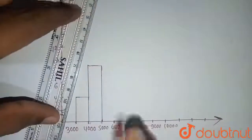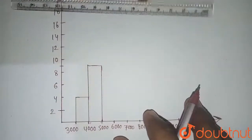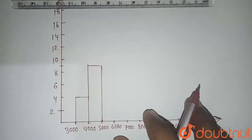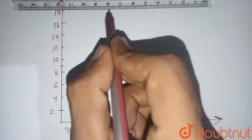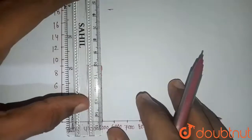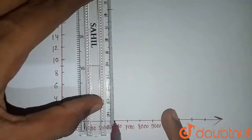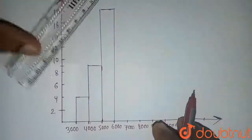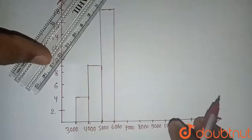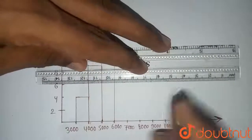From five thousand to six thousand, the number of people is 18, which is the highest frequency. We draw the tallest rectangle for this interval. From six thousand to seven thousand, the frequency is six, so we draw a shorter rectangle at height six.